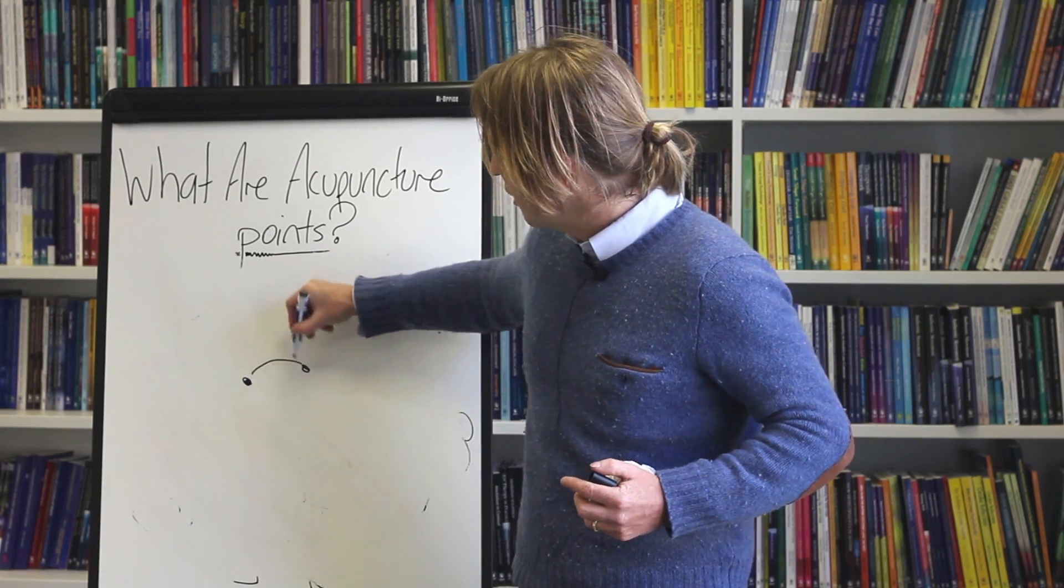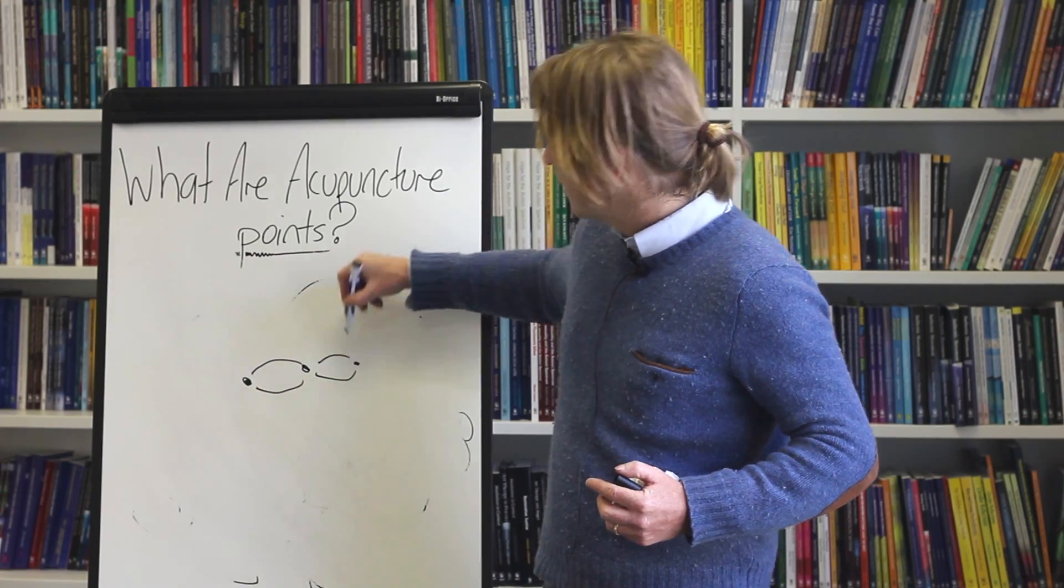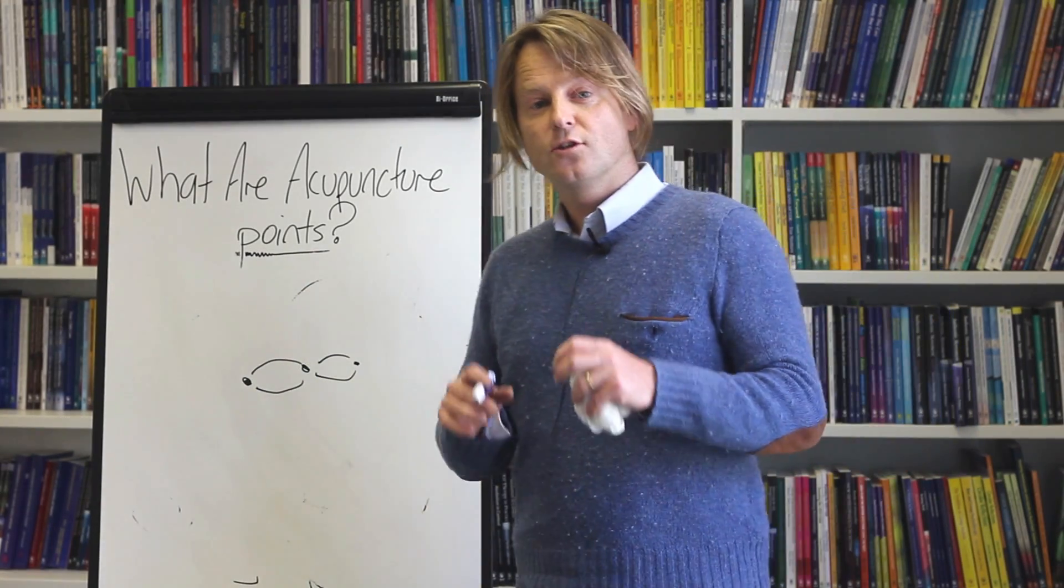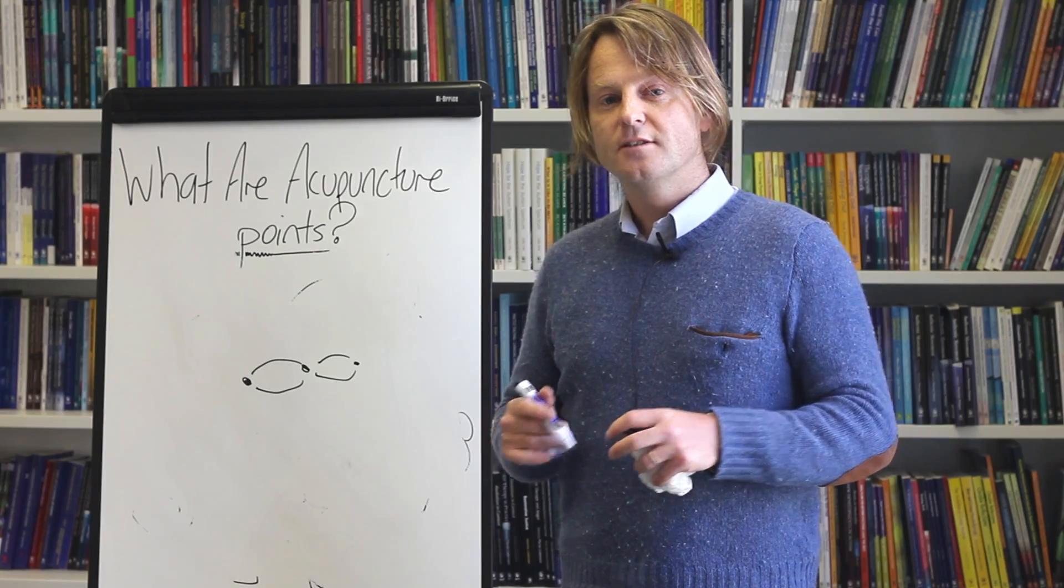And between those nodes, information travels. And in the adult, those nodes become the acupuncture points. That is what a node is in the body. It's a place in the body that organizes our embryological development. And the incredible thing is,